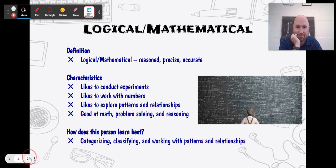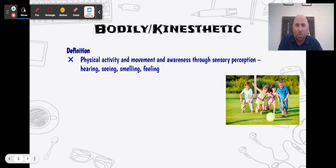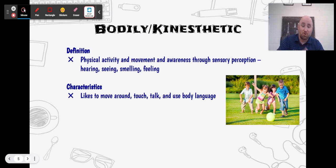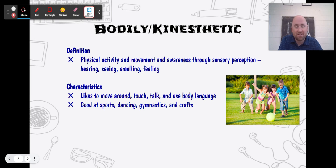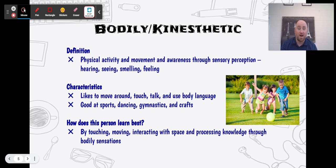Our next one is bodily kinesthetic. These are people who enjoy physical activity, movement, and awareness through sensory perception — hearing, seeing, smelling, feeling. Maybe you fidget or click a pen, but it helps you focus — that's bodily kinesthetic. These people like to move around, touch, talk, and use body language. They're usually good at sports, dancing, gymnastics, and crafts. This person learns best by touching, moving, and processing knowledge through bodily sensations. You might pick things up quickly in sports but struggle sitting still during lectures.